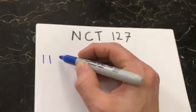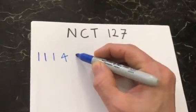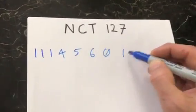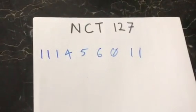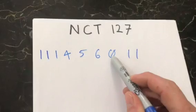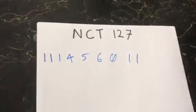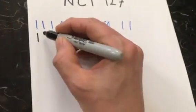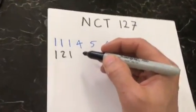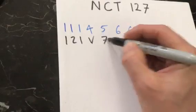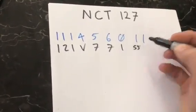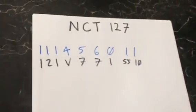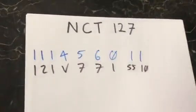I'm going to write your 1, your 1, your 1, your 4, your 5, your 6, your 0, your 1, your 1. Now that right there, we've already said sums to 20. But it has a special character in it. So we're going to move on. What's below it? We've got a 1, 2, 1, right? And then you have a V7, 7. And then you have a 155, 10.